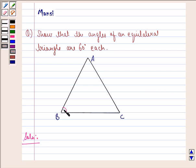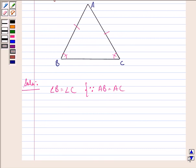We see that angle B is equal to angle C because AB is equal to AC. Again, angle C is equal to angle A because BC is equal to BA, since these are the sides of an equilateral triangle.